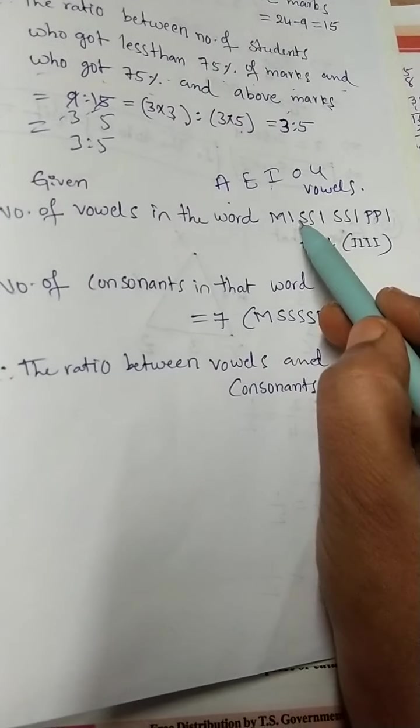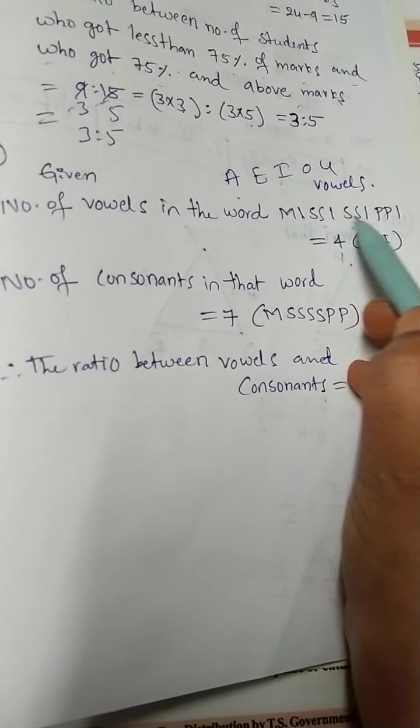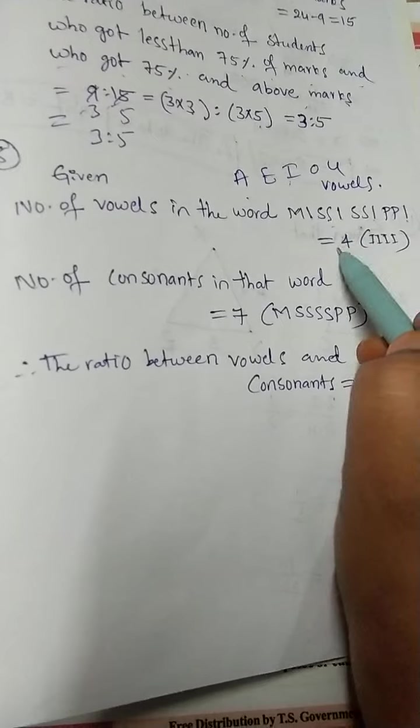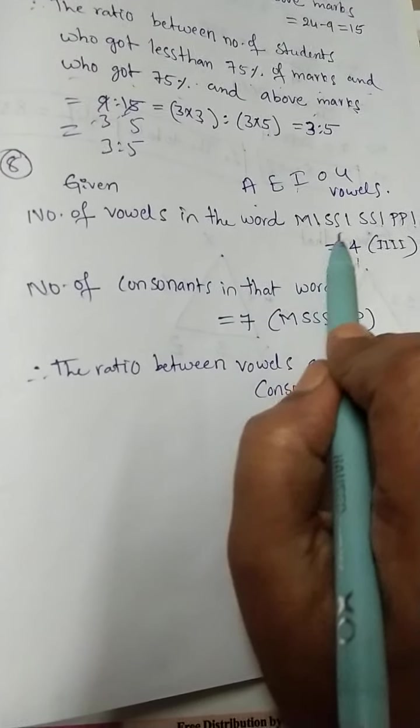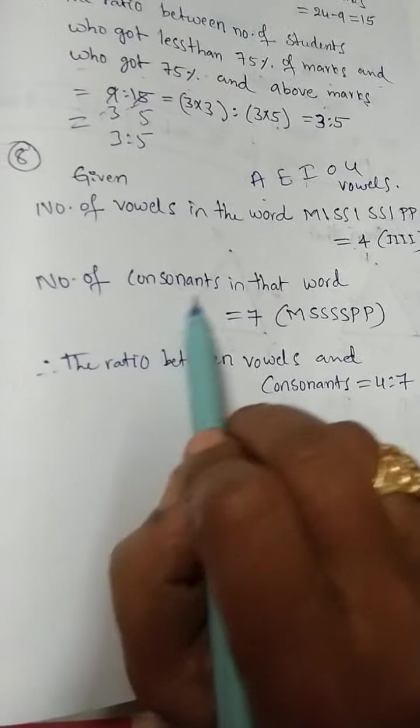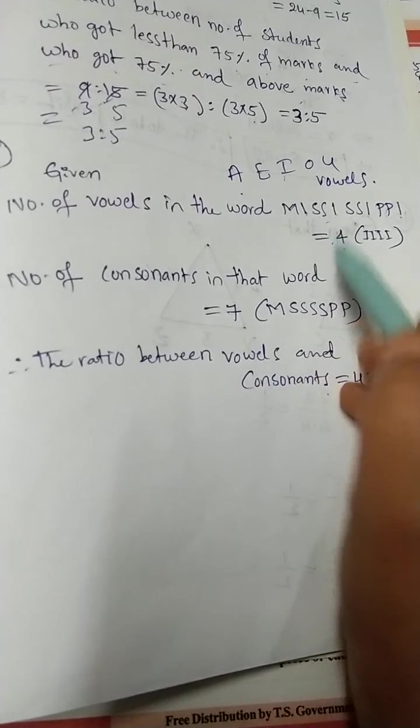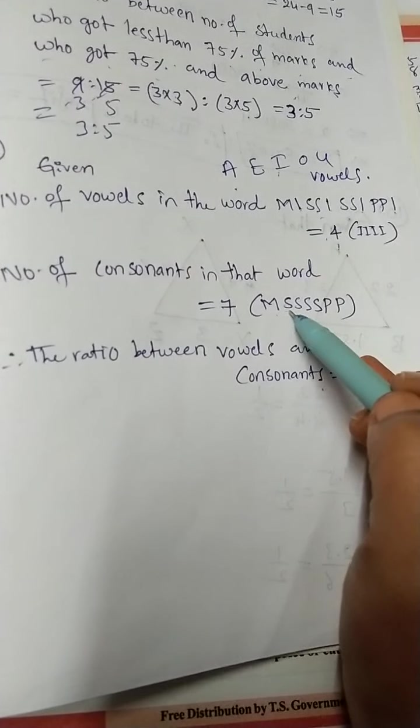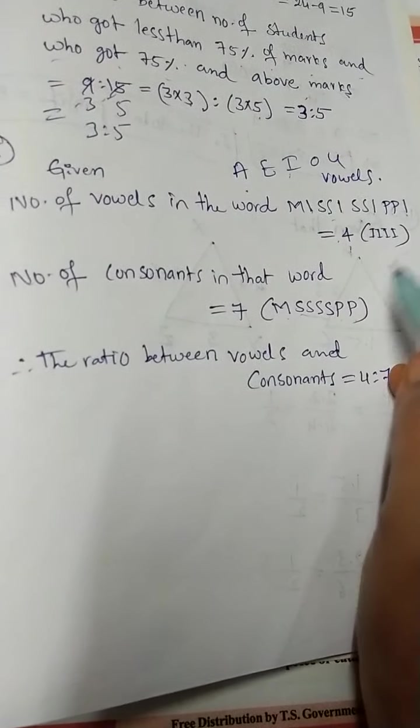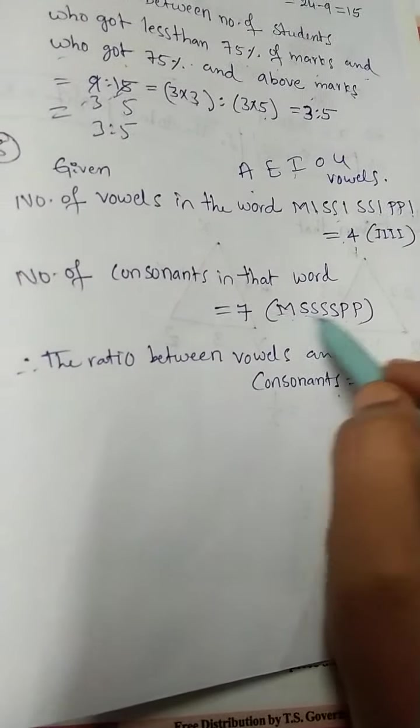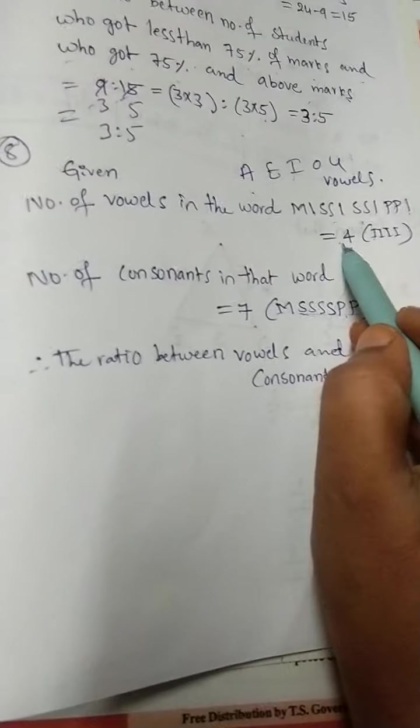In this given word, we have I four times. So number of vowels in this word is 4. Number of consonants, remaining all are consonants. Those are M, S, S, S, P, P. These are the consonants. How many letters? 7. Here, how many letters? 4.